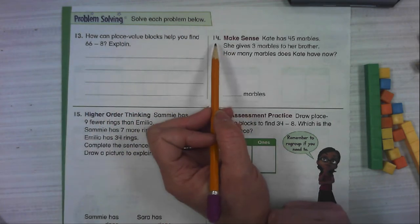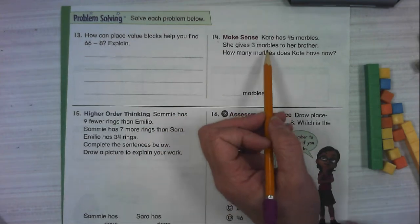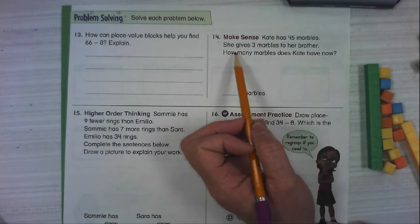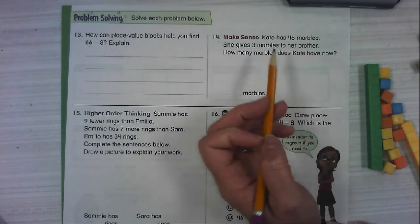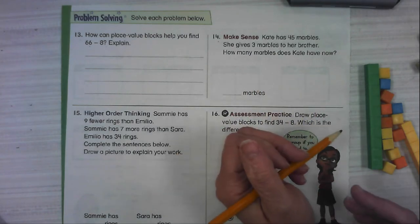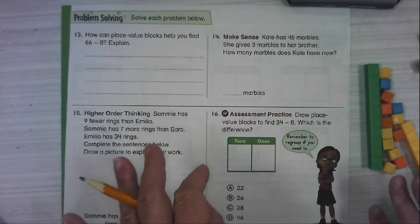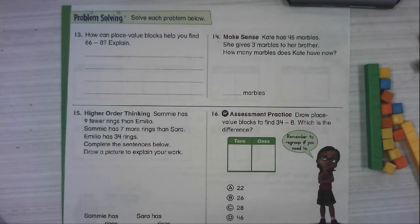Number 14. Kate has 45 marbles. She gives 3 marbles to her brother. How many marbles does Kate have now? So think to yourself, are we putting things together? Are we taking apart? Are we comparing? And that should help you figure out if we need to add or subtract.